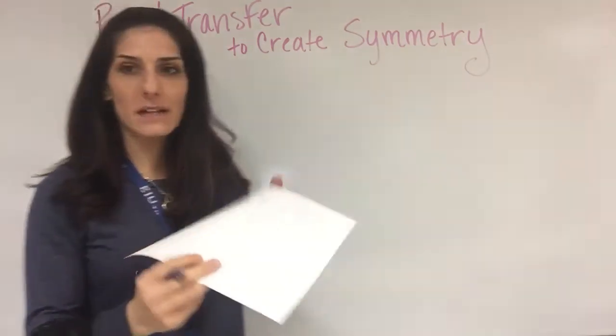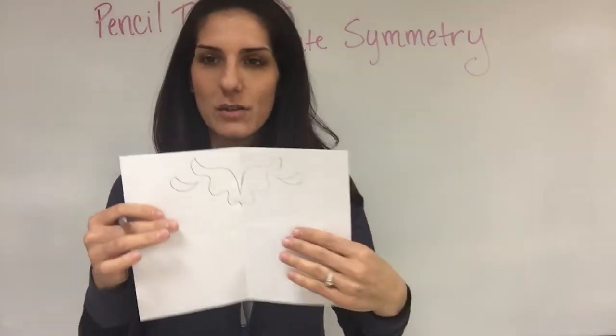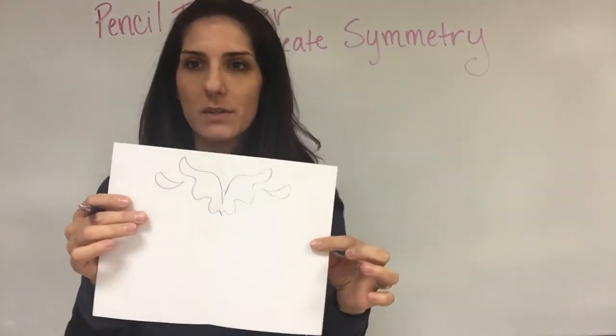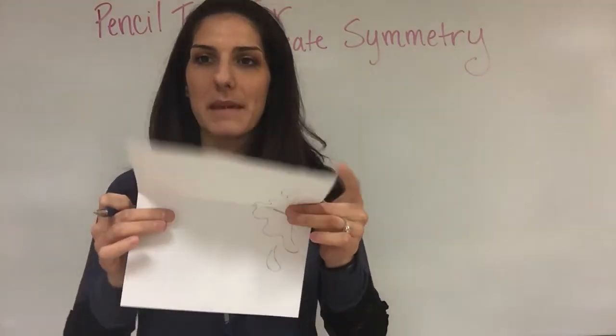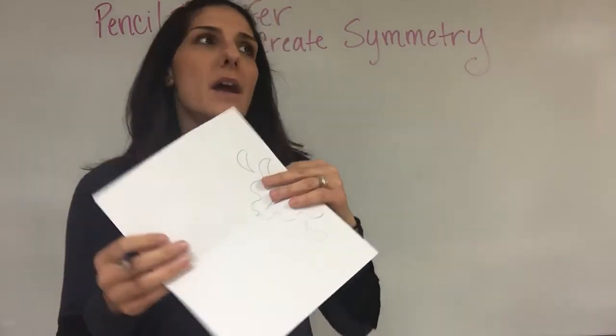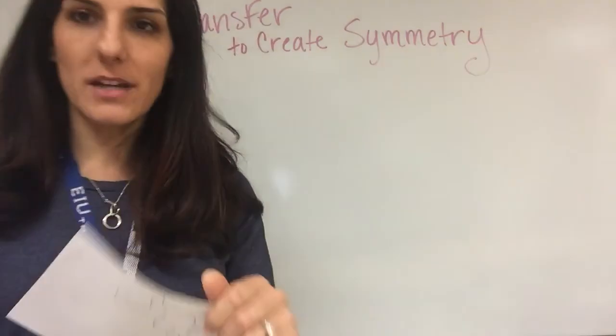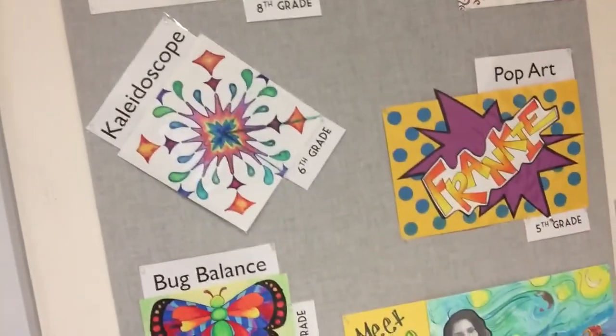I have my kids do multiple projects with pencil transfers. We do a cityscape where we have buildings on top and make it look like a reflection in water. We also do a kaleidoscope project, which is right over here, where they transfer it eight times to create symmetry. Then this butterfly below it—that was really good placement.